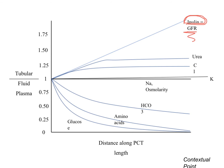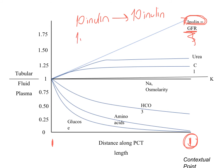Now let's look at inulin. We have 10 inulin at the start of the proximal convoluted tubule, and we still have 10 inulin at the last part of the proximal convoluted tubule. This is why inulin is used to measure GFR. Because we are still reabsorbing water but inulin stays stable, we draw inulin above one.